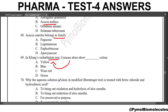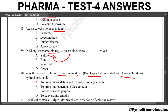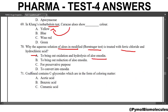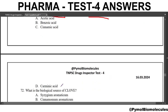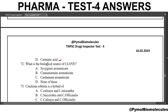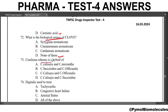Next question: why is the aqueous solution of aloes in the modified Borntrager test treated with ferric chloride and hydrochloric acid? The answer is to bring about the oxidation and hydrolysis of aloe-emodin. Cochineal contains C-glycosides in the form of the coloring agent carminic acid. What is the biological source of clove? The answer is none of the above. Cinchona rubra is a hybrid of Cinchona succirubra and Cinchona officinalis.